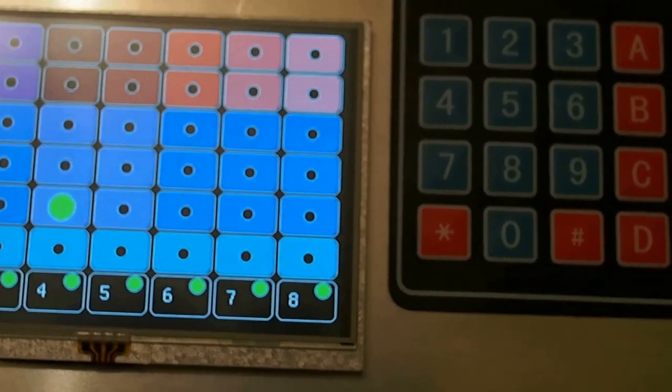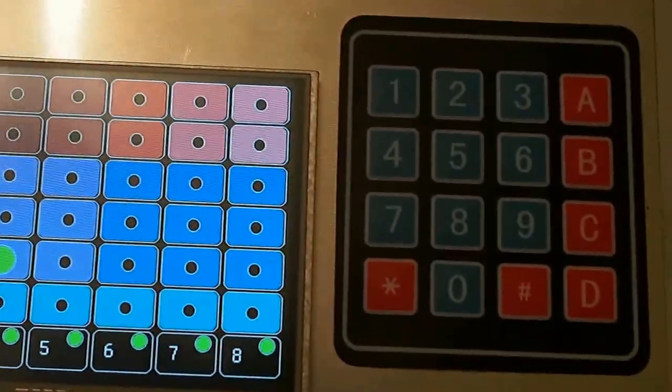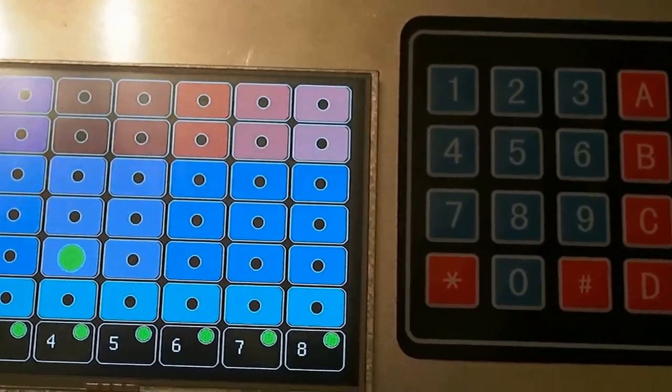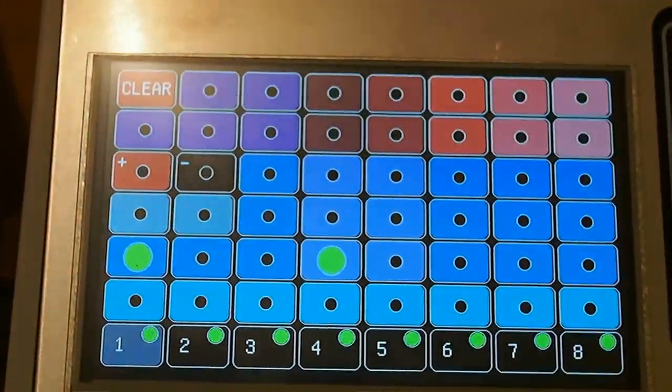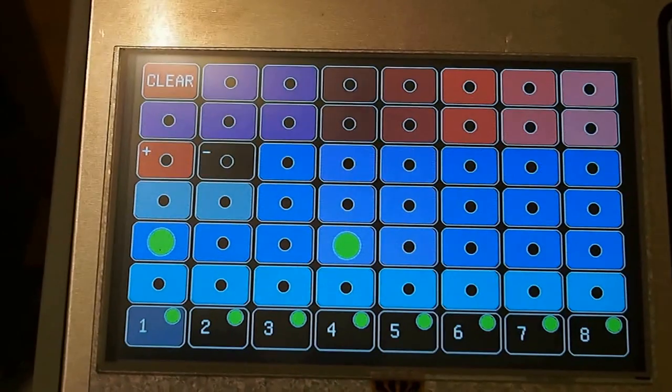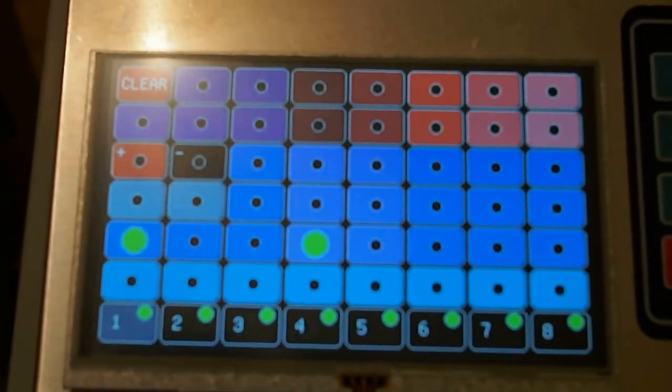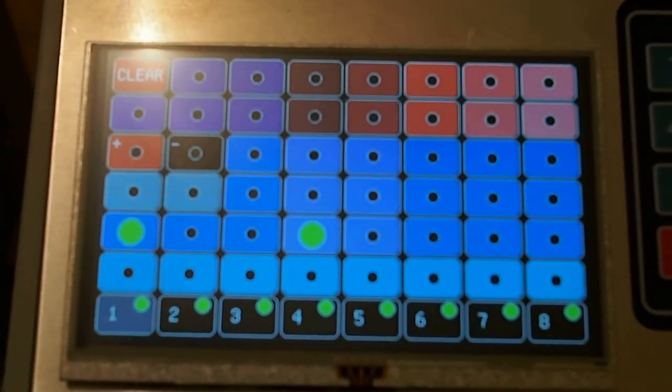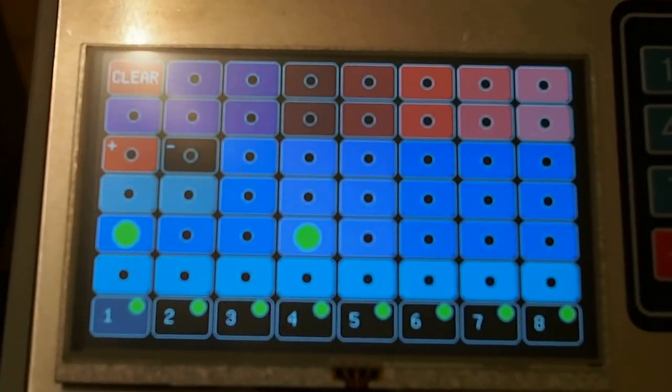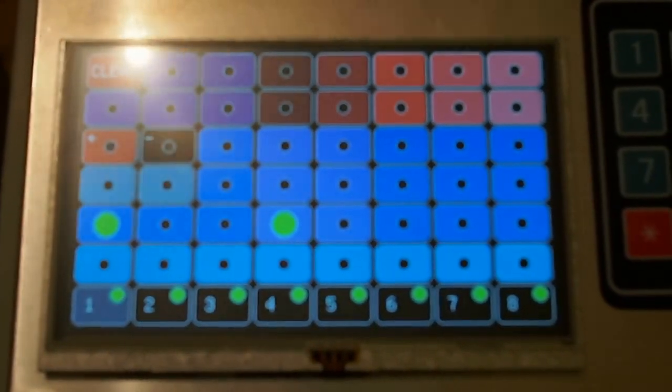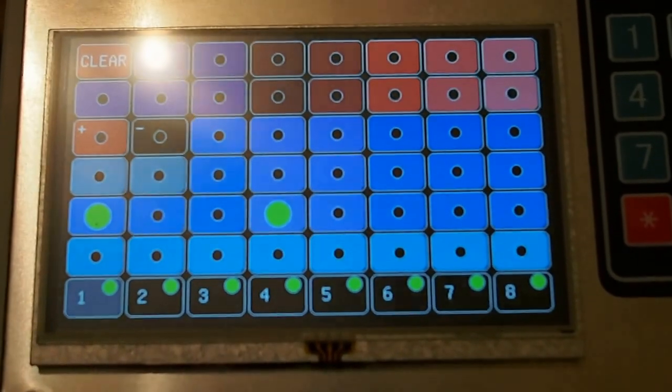And that's the basics of saving. As far as the banks themselves, bank A, B, and C each contain 128 patches, so each memory would be equivalent to looking at that screen and just seeing the 8x6 grid there and that configuration. So that's one patch. So banks A, B, and C contain 128 each for a total of 384 user memories for individual effects.